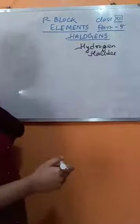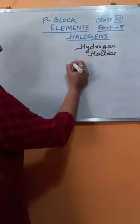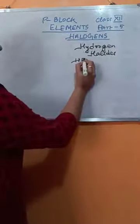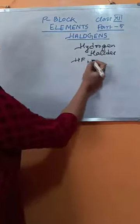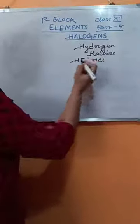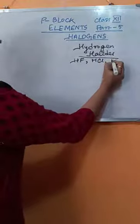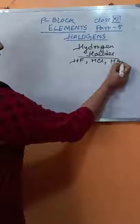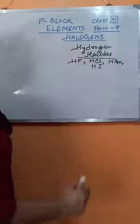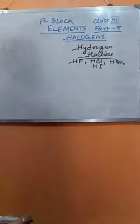Now, what are the hydrogen halides? These hydrogen halides are basically hydrogen chloride, hydrogen bromide, and hydrogen iodide. These are the hydrogen halides.